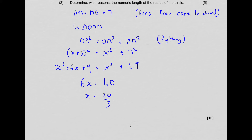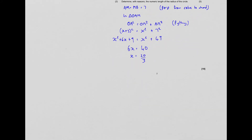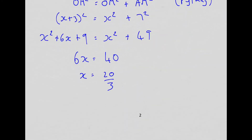Recall that the question asked for the radius, and we've only just worked out X. So to that we need to add 3 to get the radius. Therefore the radius will be 20 over 3 plus 3, and using your calculator that gives you 29 over 3 centimeters.